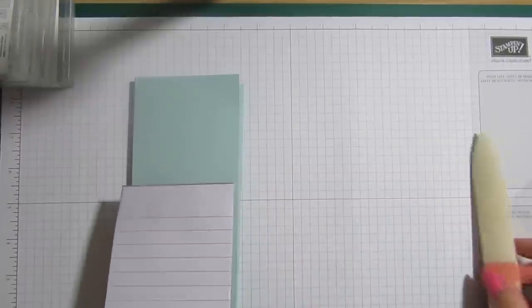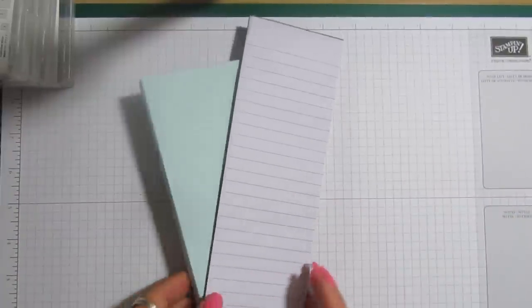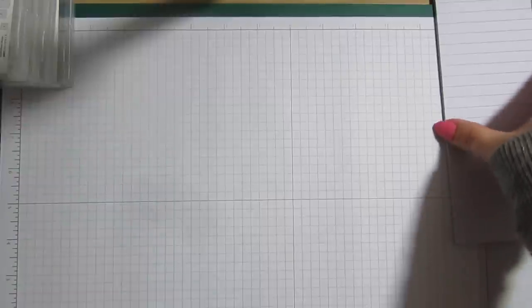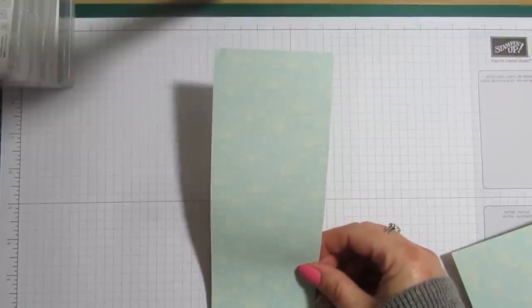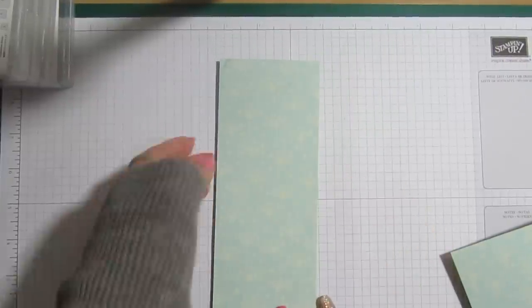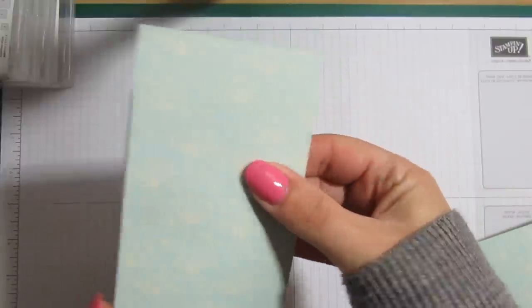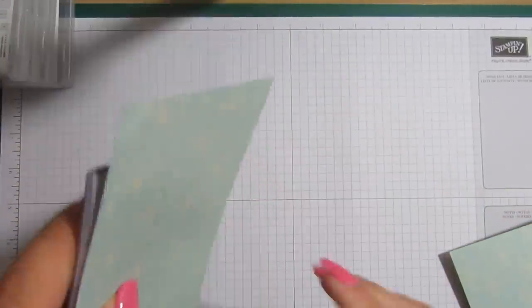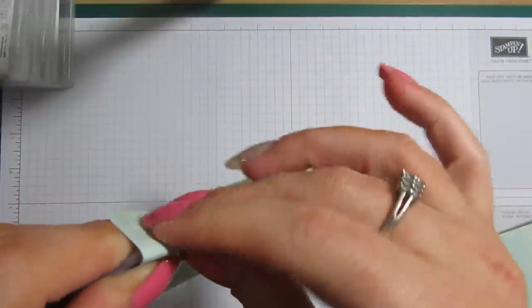Sorry about that, I hadn't even got the notepad ready. Right, so I've got my notepad, which is just a shopper notepad. And I think what we'll do first is we'll cover our notepad. So, take the longest piece of your DSP and just line it up here. Get it straight on your notepad. And then all I'll do is get it where I think it needs to be. And then I'll just literally fold it round the top.